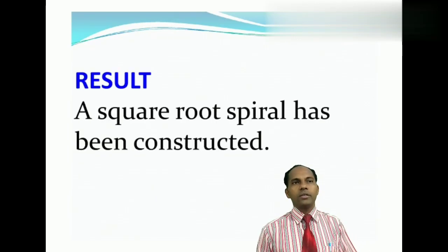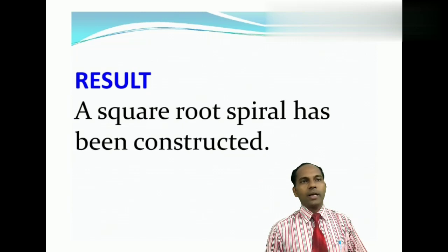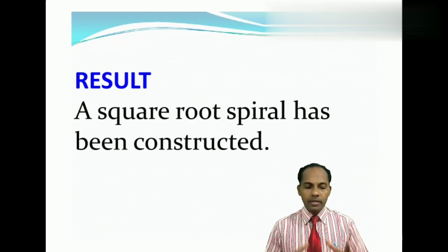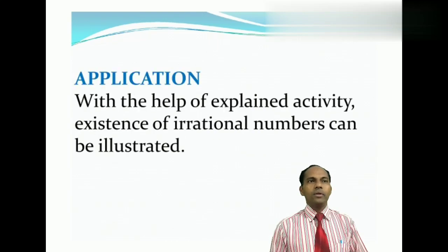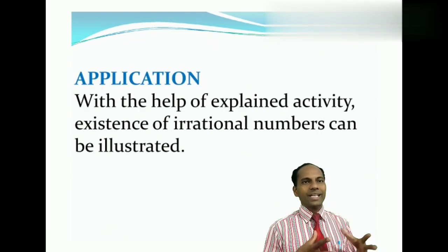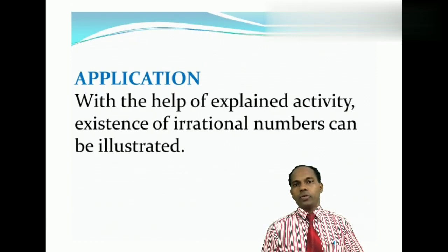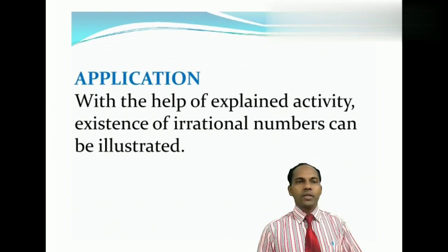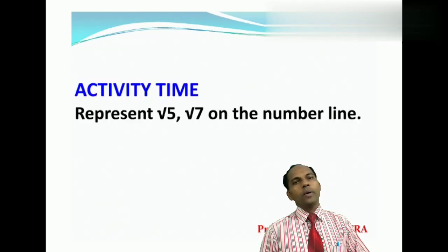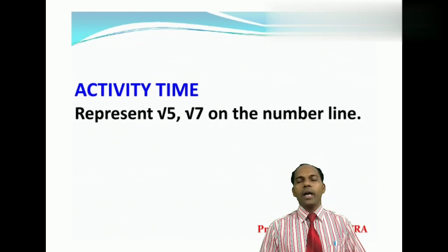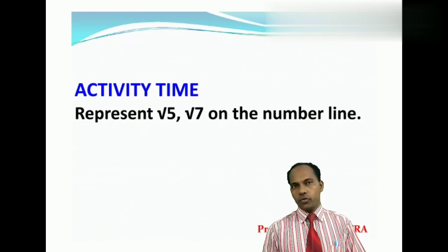And from this, we got the result. A square root spiral has been constructed. And this activity can be applicable. So with the help of this explained activity, existence of the irrational number can be illustrated. And just for you, the homework it is given. You can do root 5, root 7, and root 8, and the number line also.